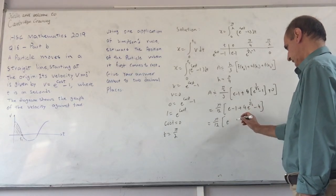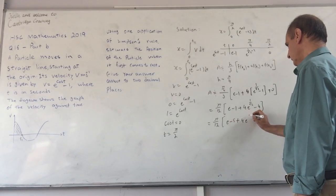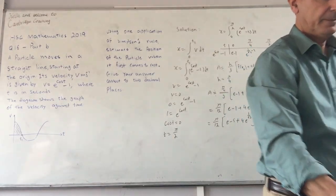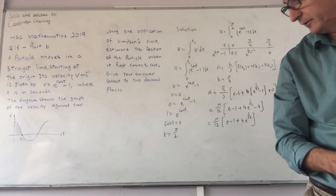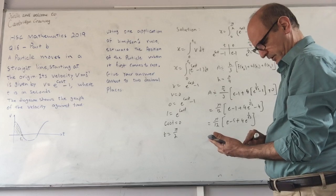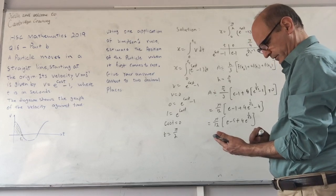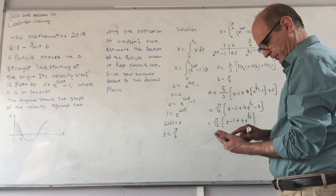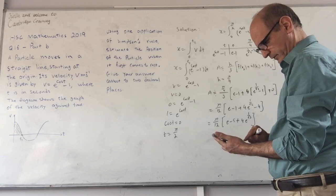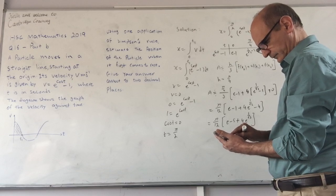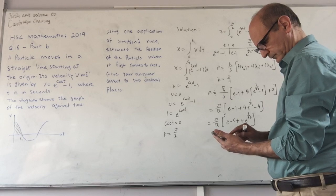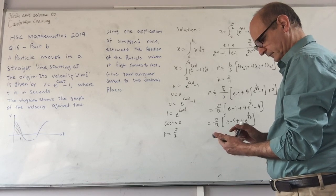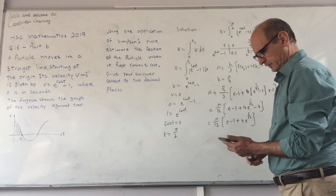If we solve that in the calculator, they want it to two decimal places. So π/12 times e minus 5 plus 4 times e to the power of 1 over root 2.